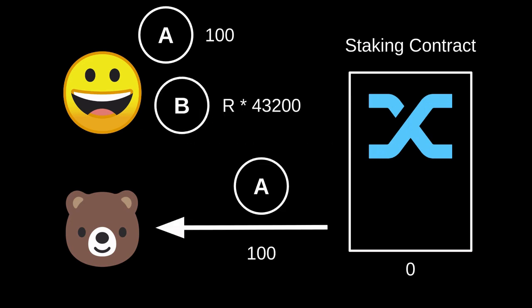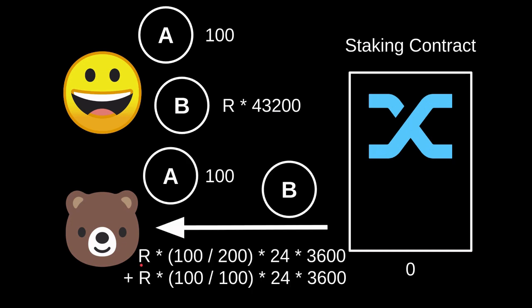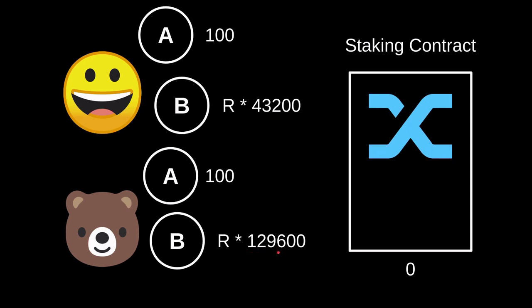Let's say another day passes and Bob also decides to unstake his 100 A tokens. How much reward would Bob receive? R tokens are minted every second. On the first day, he staked 100 tokens out of a total of 200 — Alice's 100 and Bob's 100 — and that lasted for a day. Once Alice unstaked, the next day R is still the same, Bob's staked amount is still 100, but the total tokens staked is now 100 because Alice withdrew the day before. That lasted for a day, giving Bob his total reward.